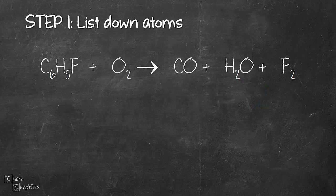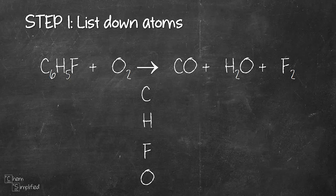The first step calls for listing down the atoms. In this example, we have C6H5F plus O2 giving us CO plus H2O plus F2. So we have carbon, hydrogen, fluorine, and oxygen. So let's list them down. Notice I write them down as atoms, not molecules. Like oxygen for example, I list it down as O rather than O2.